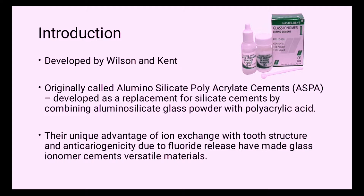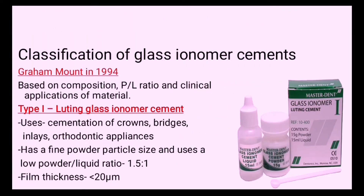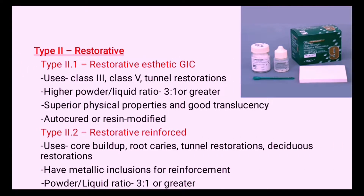Graham Mount in 1994 gave a classification of glass ionomer cement based on composition, powder-liquid ratio, and clinical application. Type 1 is luting glass ionomer cement, used for cementation of crowns, bridges, inlays, and orthodontic appliances. It has a fine powder particle size, uses a low powder-liquid ratio of 1.5:1, and film thickness is less than 20 micrometers.